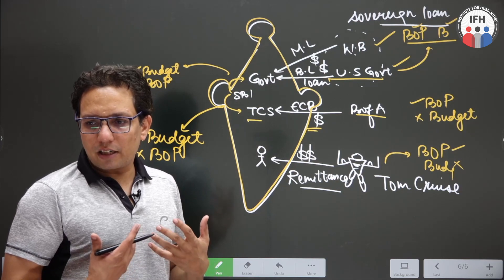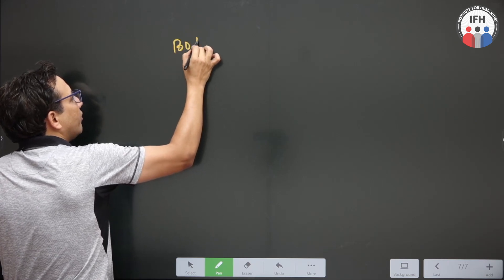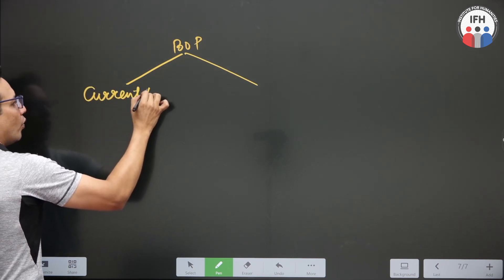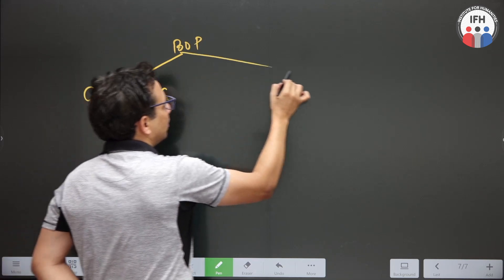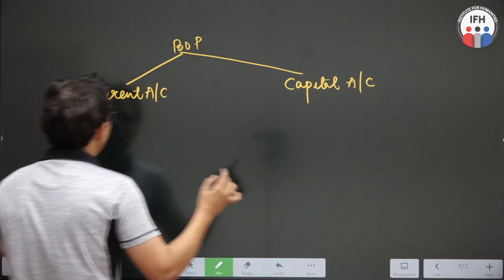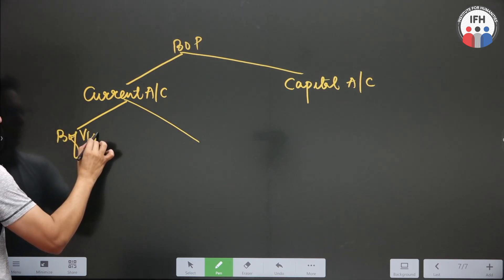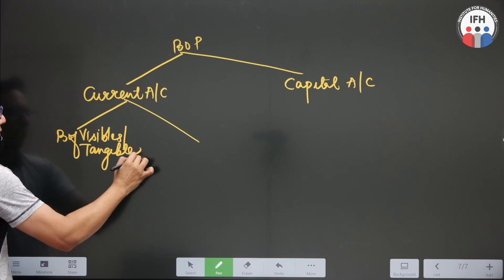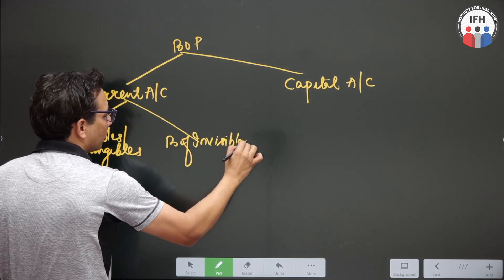Now let me discuss the various components of BOP. In the case of BOP, we have two accounts: one is current account, and the other is capital account. The current account consists of two parts: balance of visibles, also called balance of tangibles, and balance of invisibles or intangibles.